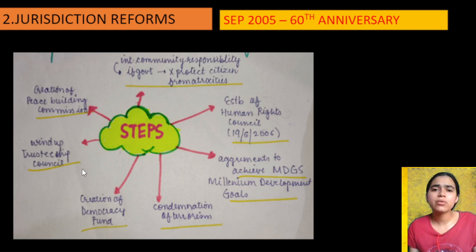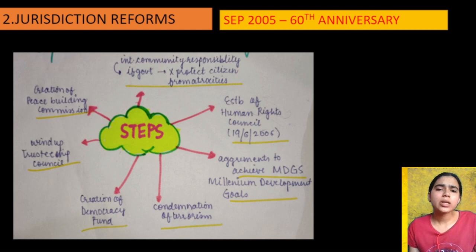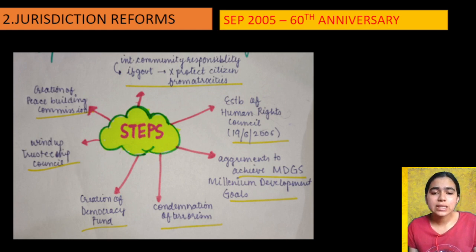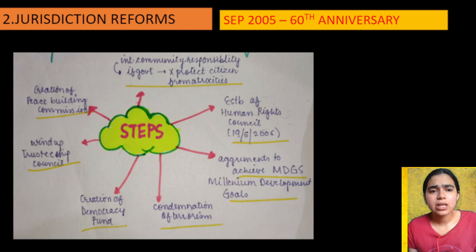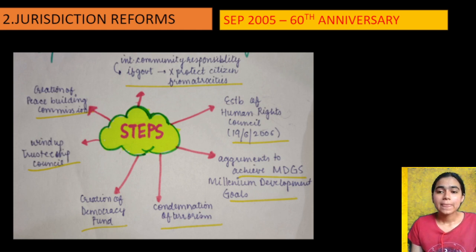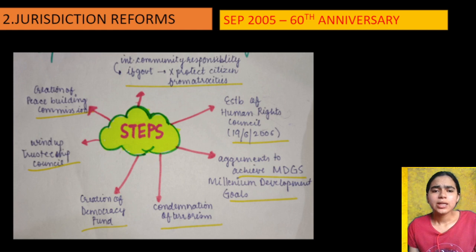You know the Trusteeship Council was already suspended. At this time in 2005, it was totally declared that the Trusteeship Council is over now. So these were the jurisdiction reforms: Peace Building Commission created, protection from atrocities, HRC established, MDGs introduced, terrorism condemned, Democracy Fund started, and Trusteeship Council ended.